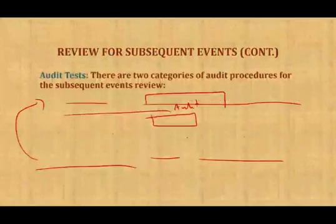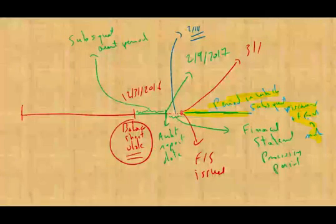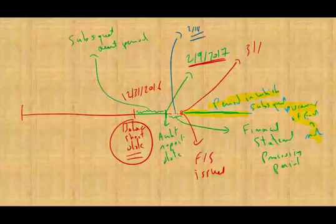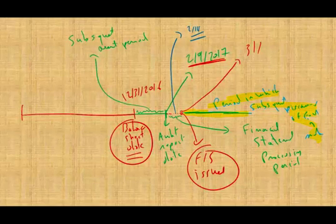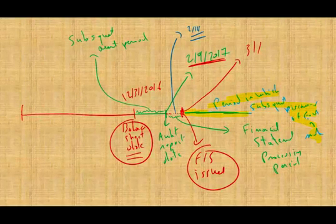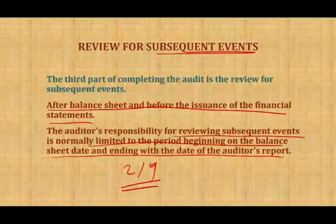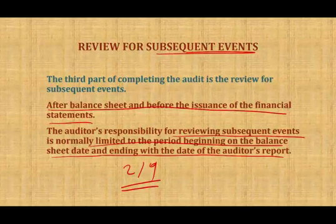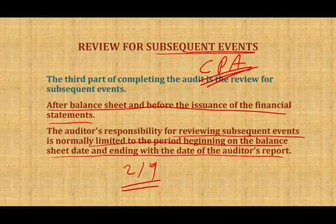To review: we have the balance sheet date, the audit report dated February 9th, 2017, then two to three weeks to issue the financial statement. The period between the audit report and the financial statement issuance is the preparation period. Anything that happens after March 1st falls in the subsequent discovery of facts period. This concludes the subsequent events and subsequent discovery of facts session. If you have any questions, email me or see me in class. Complete your homework and quiz. If you're studying for the CPA exam, always study hard — this topic is tested.